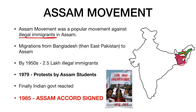By 1950, around 2.5 lakh immigrants reached Assam. And given this continuing influx of illegal immigrants from Bangladesh into Assam, student leaders in 1971 came out and protested, demanding detention and deportation of illegal immigrants from Assam. Here you can see in this image people, especially students, protesting.